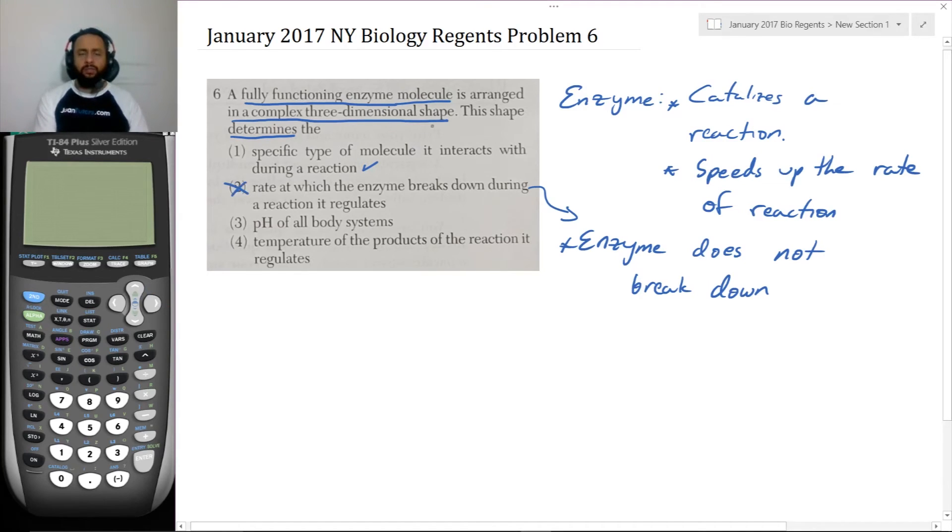The shape determines the pH of all body systems? I'm not sure how the shape would determine the pH of any body system. And this is saying the pH of all body systems. The pH is the concentration of hydronium ions or hydrogen plus ions, or really hydronium ions. So that's not it.